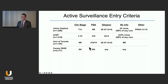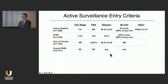The selection criteria of large active surveillance series — the Hopkins, UCSF, and Toronto series — include clinical stage, PSA, and a minority of patients in these large series have a grade group 2 prostate cancer, Gleason 3+4. PSA density was an enrollment criterion for the Hopkins series.